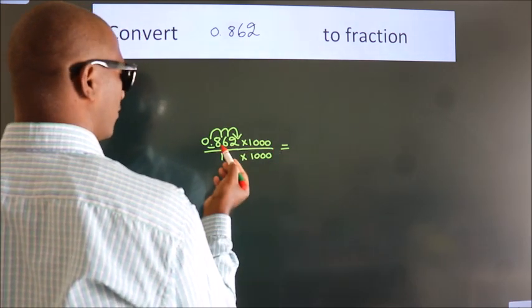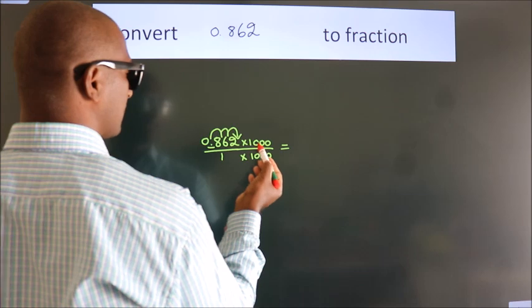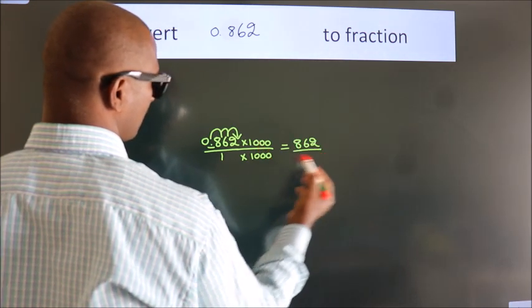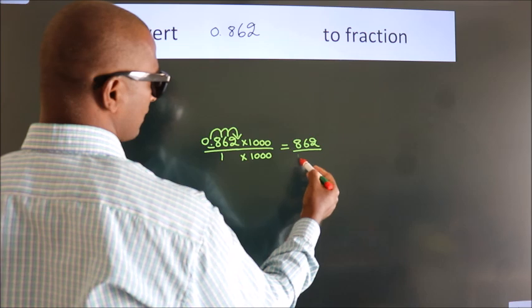0.862 into 1000 equals 862. 1 into 1000 equals 1000.